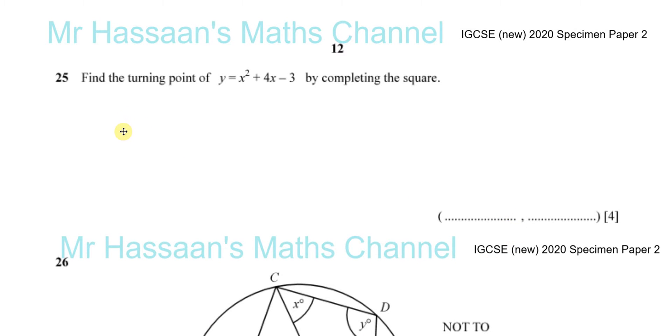Question number 25 from the specimen paper 2 of the IGCSE 2020. In this question, we are asked to complete the square to find the turning point of this quadratic function: y equals x squared plus 4x minus 3. Find the turning point by completing the square.